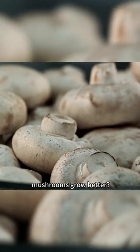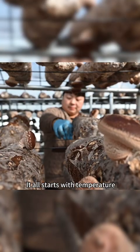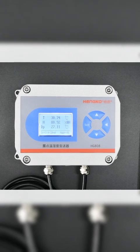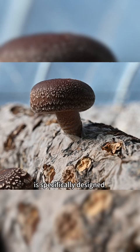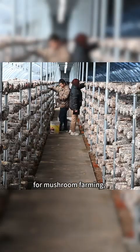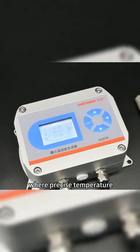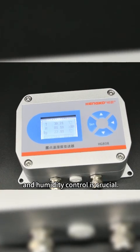Do you know how to make mushrooms grow better? It all starts with temperature and humidity control. Henko's HG808H high humidity temperature controller is specifically designed for mushroom farming, especially in environments where precise temperature and humidity control is crucial.